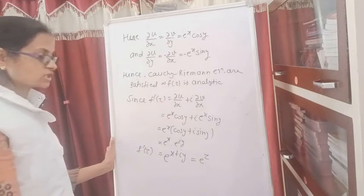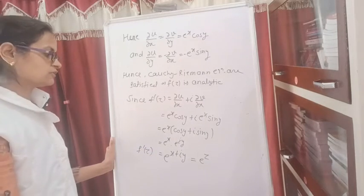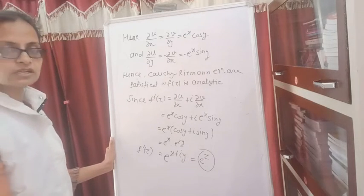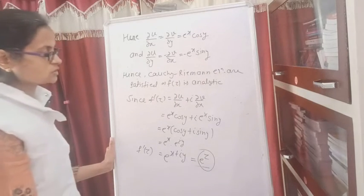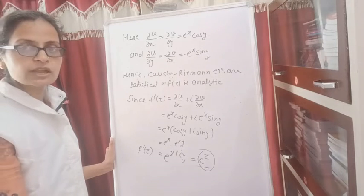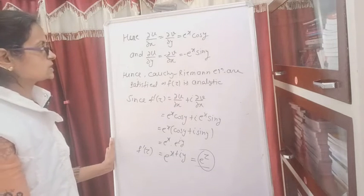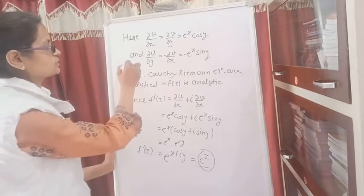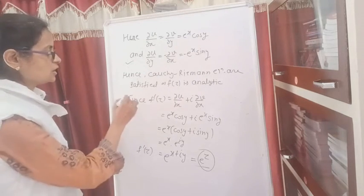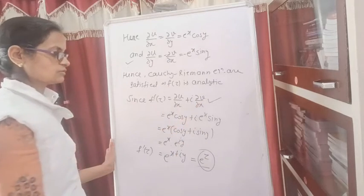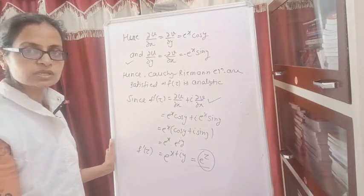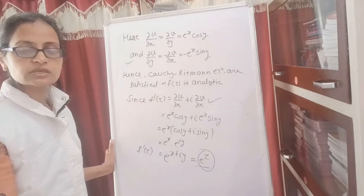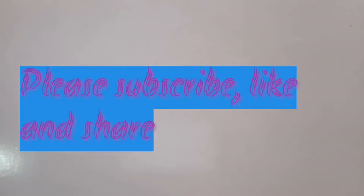And x plus i·y is z, so we get e to the power z. The differentiation of e to the power z is e to the power z — even if we differentiate it directly, we get the same result, confirming it is correct. This way we have proved that the function is analytic, the Cauchy-Riemann equations are satisfied, and the derivative of e to the power z is e to the power z. In the next video, we will discuss harmonic functions. Thank you.